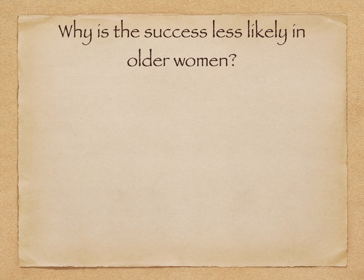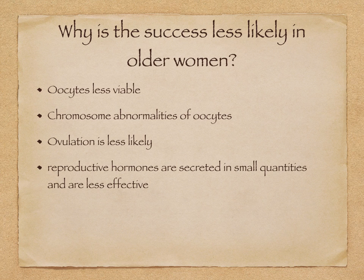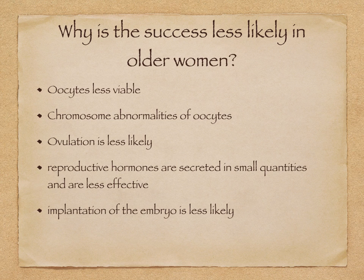Why is IVF success less likely in older women? Oocytes are less viable and there may be chromosome abnormalities of oocytes. Ovulation is less likely. Reproductive hormones are secreted in small quantities and are less effective. Implantation of the embryo is less likely, and there is also a higher risk of miscarriage.